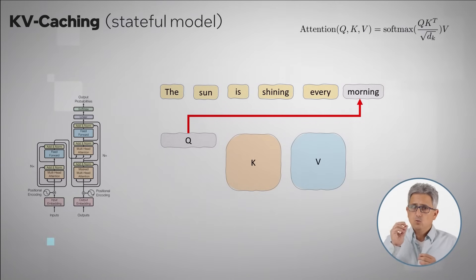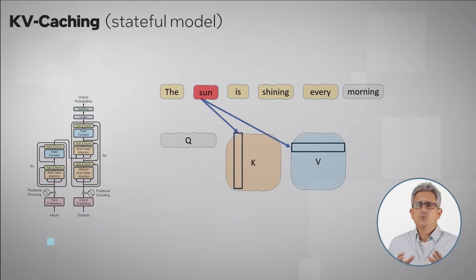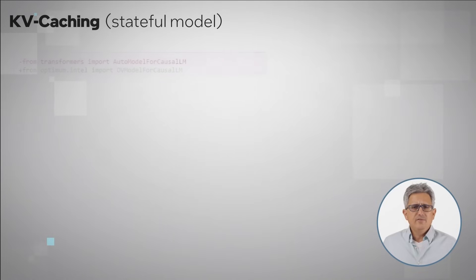So multiplying Q by K sort of generates the attention between the current token to all the previous ones. Since we are generating one token at a time, a new Q vector each time, the K and V matrices do not change much between the iterations. In this example, the word sun, for example, corresponds to a column at K and a row at V. These values will not change much as new tokens fly in. So instead of recalculating these values, we can just store them in the cache and save a lot of compute.